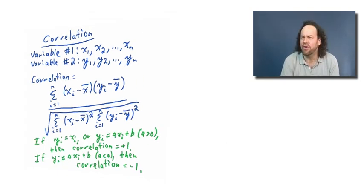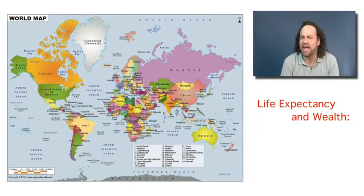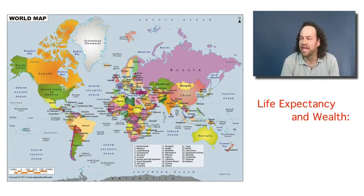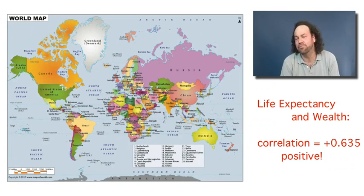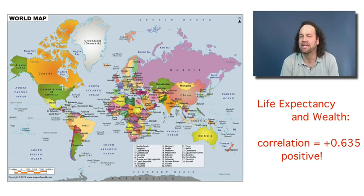So what about life expectancy and the wealth of the countries? Well, in that case we can compute the correlation, and we see here that it is indeed positive and pretty high — it's not one, but it's getting up there. So this shows that yes indeed, there is a clear positive relationship between the wealth of a nation and the life expectancy of a nation.